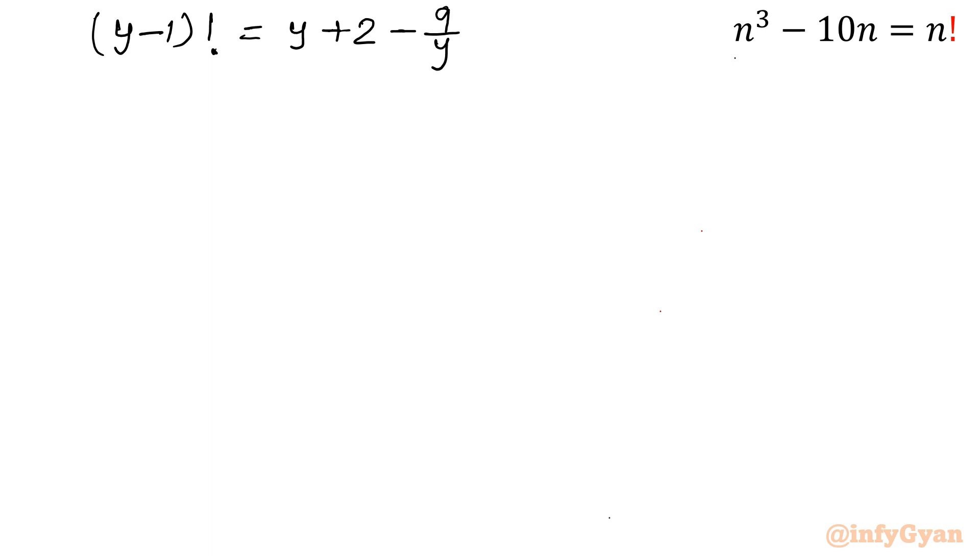Now from this equation we will conclude two points. First point is because our left hand side is always integer, as we know because it is having factorial, that would always be integer. So right side should also be integer.